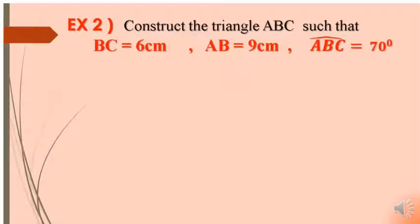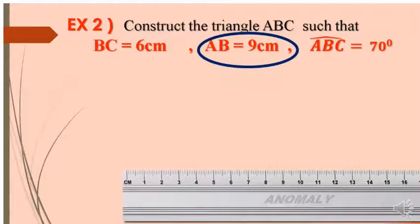Let's take this last example. Construct triangle ABC such that BC equal to 6 cm, AB equal to 9 cm, and angle ABC equal to 70 degrees. This is the case of side, angle, side. In this case, we start drawing with the longest side. The longest side here is AB, which is equal to 9 cm. So, in this case, we are going to start drawing with AB.